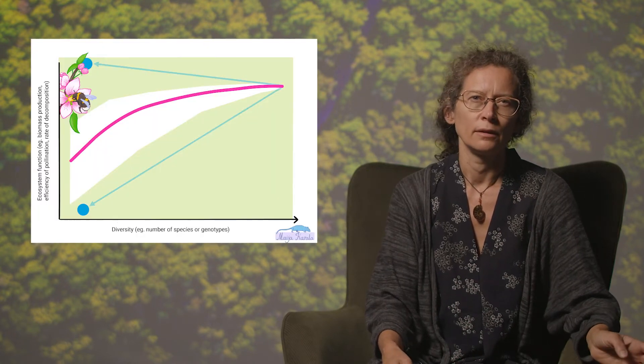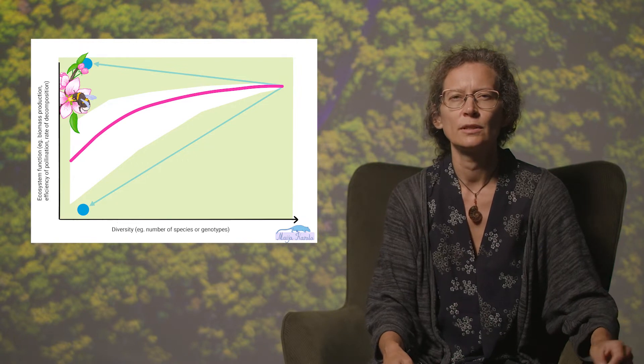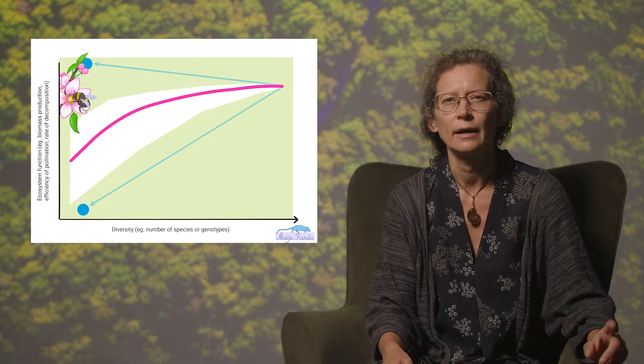In a famous 2012 review titled 'Biodiversity Loss and its Impact on Humanity,' Professor Cardinale and colleagues summarized the evidence as follows: in most cases, the relationship falls into the zone around the solid line. Three general conclusions came from the synthesis. First, diversity in nature is important for functioning, and its effects are remarkably consistent and positive — whether we look at species, genotypes, or trophic groups, their numbers contribute to better functioning.